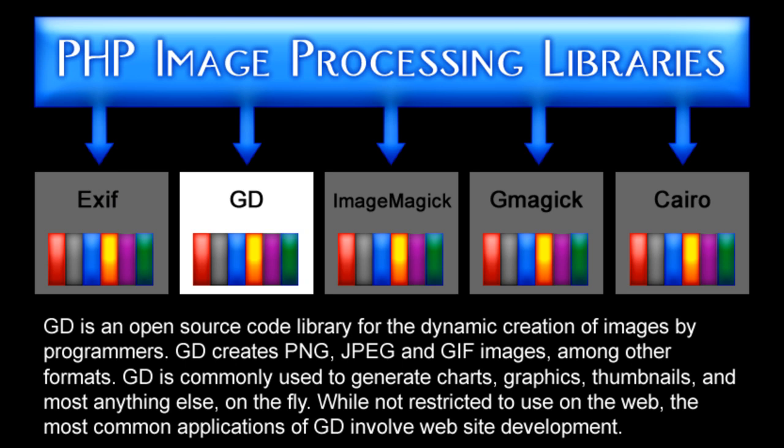The GD image processing library is the one that we are going to be focusing on throughout all the things we demonstrate within this textbook. GD is an open source code library for the dynamic creation of images by programmers. GD creates PNG, JPEG, and GIF images, among other formats. GD is commonly used to generate charts, graphics, thumbnails, and most anything else on the fly. While not restricted to use on the web, the most common applications of GD involve website development, and that's why we are focusing on GD.